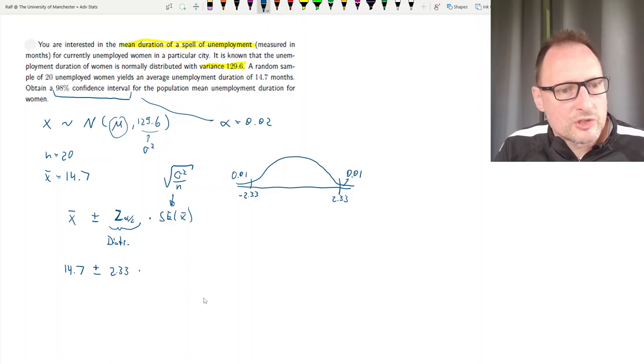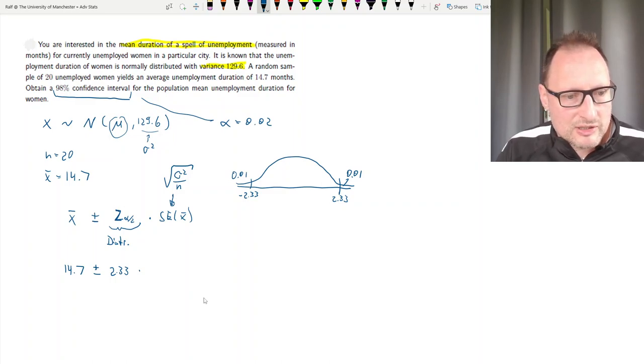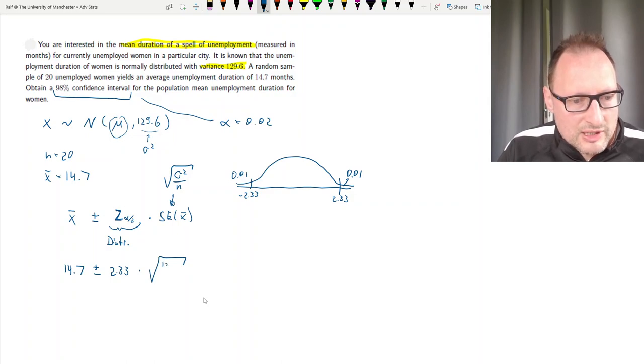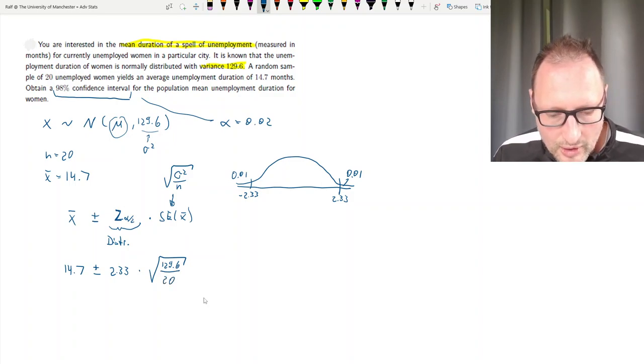In other locations, you may have to use a sample variance, but that will then have an impact on that distribution. So in our case, it's the square root of 129.6 divided by the sample size, which is 20. So this is all the hard work done.